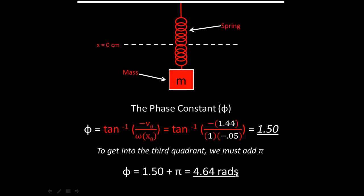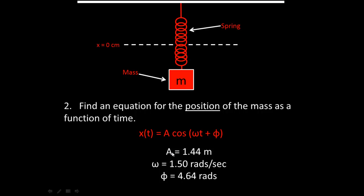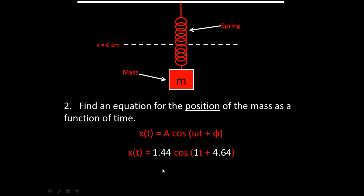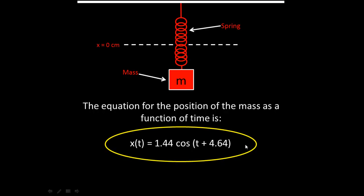Now we have all variables: amplitude A equals 1.44 meters, angular frequency omega equals 1 radian per second, and phase constant phi equals 4.64 radians. Plugging into the position equation gives x(t) equals 1.44 times cosine of (t plus 4.64). That is the equation for the position of the mass as a function of time.